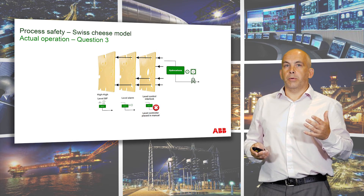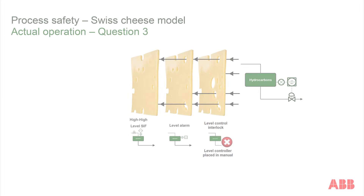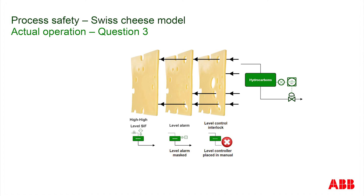It becomes annoying for the operator. So the operator thinks he'll mask that alarm until the level control gets resolved. As soon as the operator masks that alarm, we've made the second barrier ineffective — introducing another hole in that particular slice of cheese.